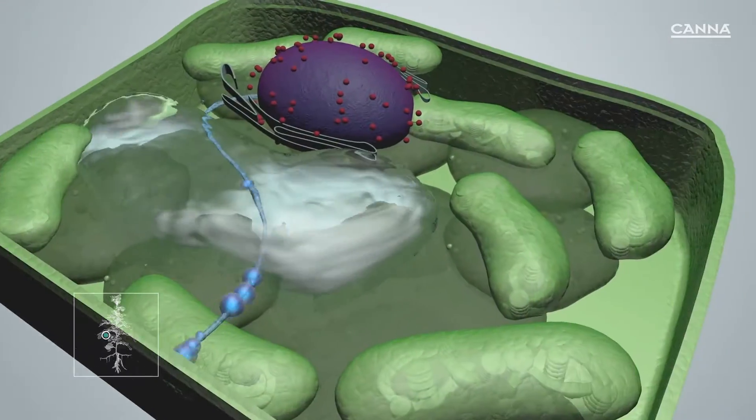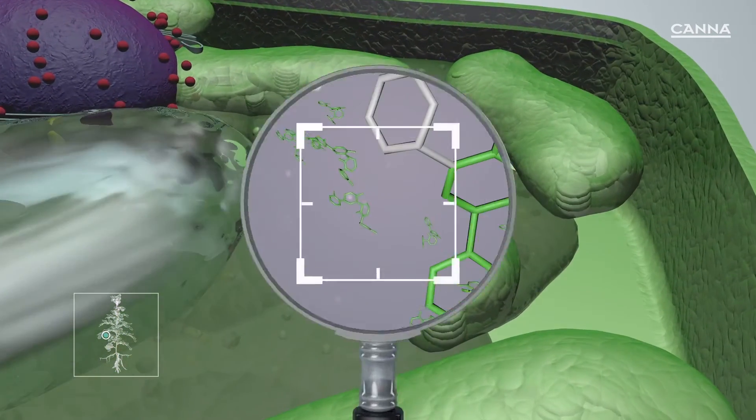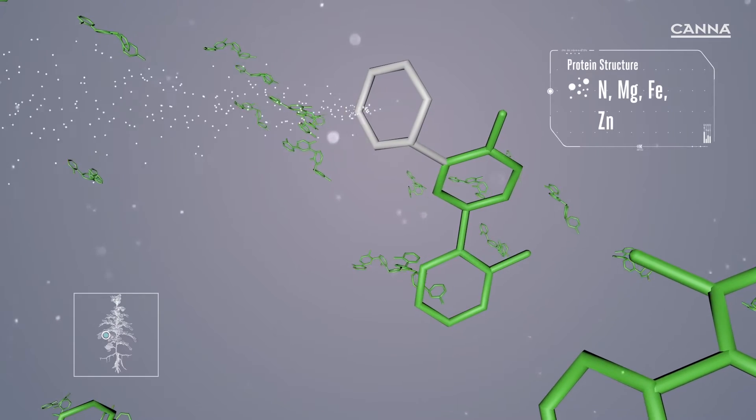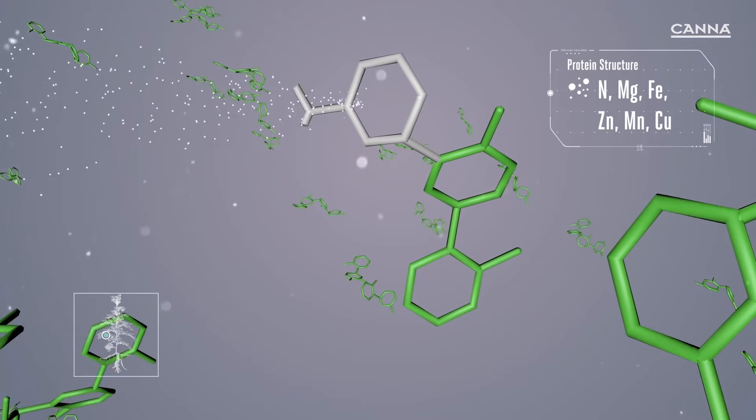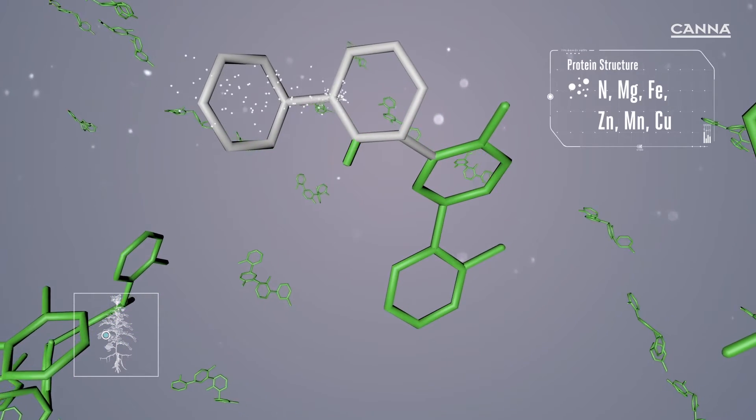The cells in the leaf multiply in the same way as seen in the roots. When a new cell has been created, the other elements start to flow in. These elements attach themselves to the protein structure and this forms a kernel which turns green.